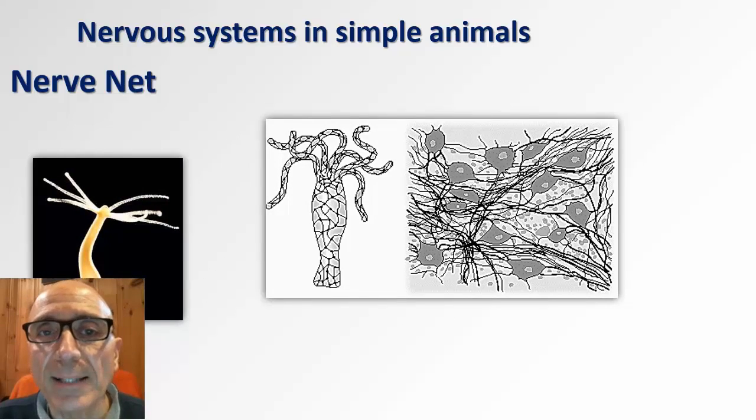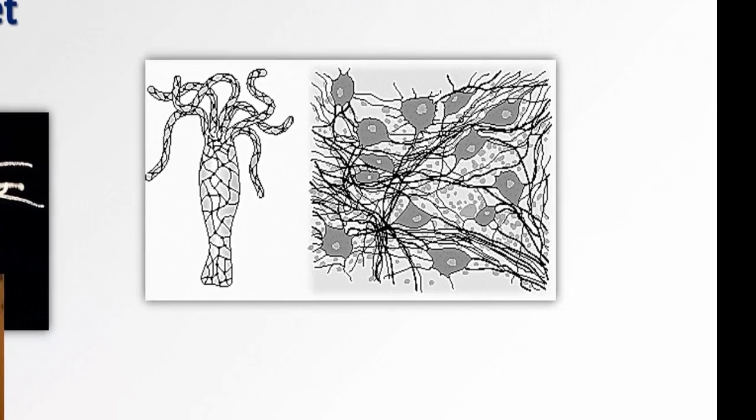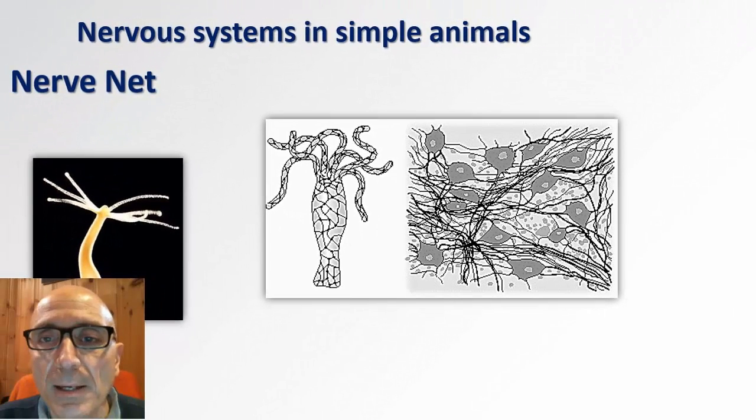A closer look at a nerve net in hydra reveals a diffuse network of neurons found throughout the body. These neurons do not exhibit any particular organizational complexity. A nerve net typically provides direct lines of communication from sensory cells to effector cells such as muscle cells.